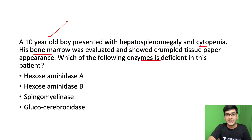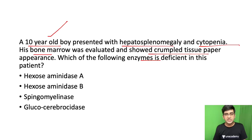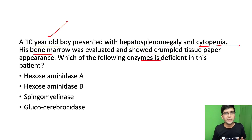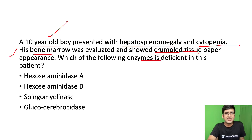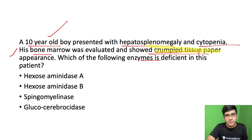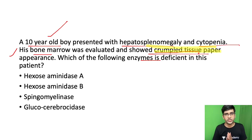A 10-year-old with hepatosplenomegaly and cytopenias — hepatosplenomegaly and cytopenias means there's cytopenia as well as liver and spleen involvement, indicating reticuloendothelial system involvement. When I say cytopenia, bone marrow is automatically involved. The question also says bone marrow involvement shows a crumpled tissue paper appearance. When I say crumpled tissue paper appearance, the diagnosis is automatically Gaucher's disease.